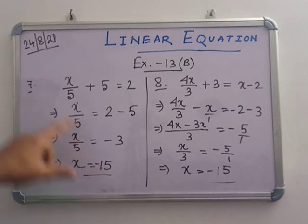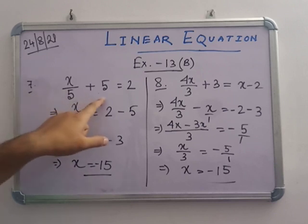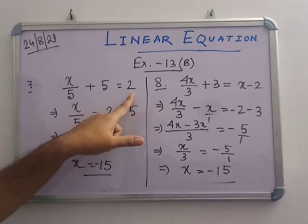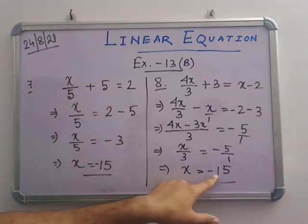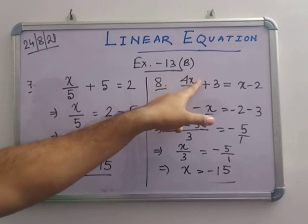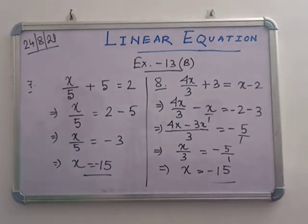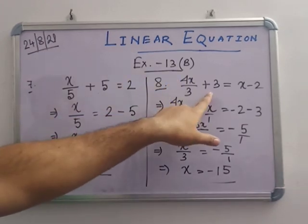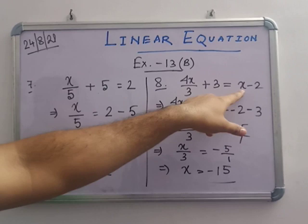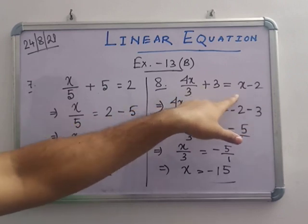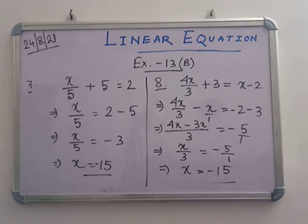Now verify. For problem 7 with x = -15: -15/5 + 5 = -3 + 5 = 2. LHS is 2, which equals the given RHS. Proved. For problem 8 with x = -15: LHS = 4(-15)/3 + 3 = -60/3 + 3 = -20 + 3 = -17. RHS = x - 2 = -15 - 2 = -17. Both sides are verified.